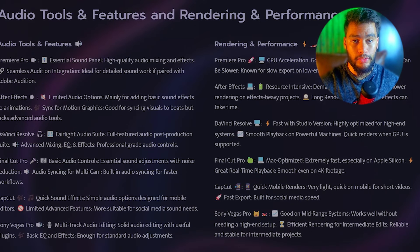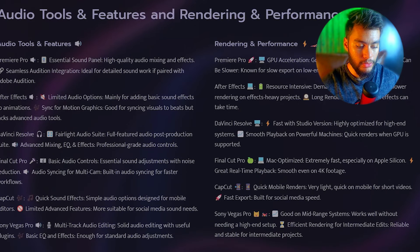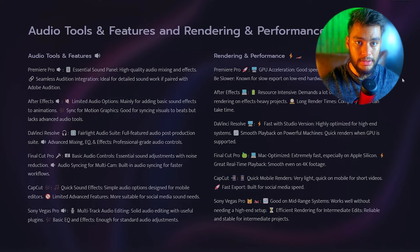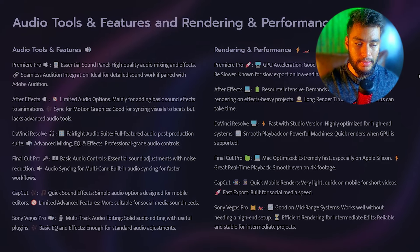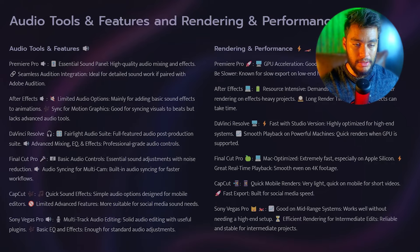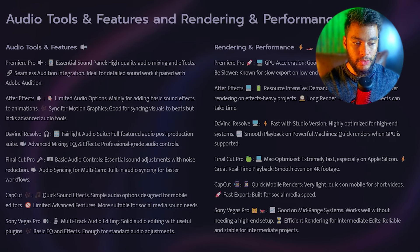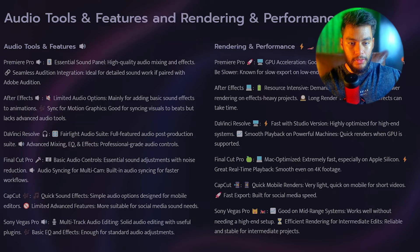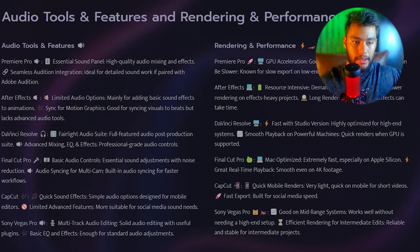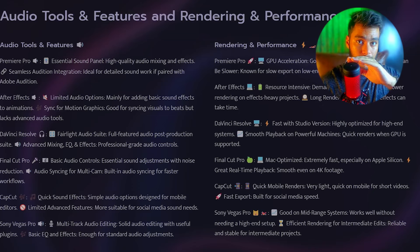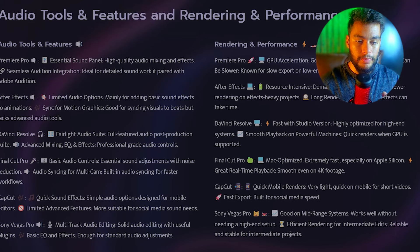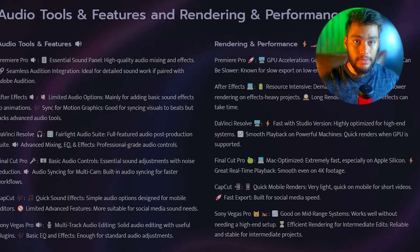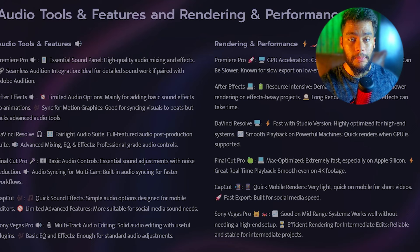Let's talk about audio tools and features. Premiere Pro is the best software if you want a lot of control over your audio, because you can also pair it with Audition, which is Adobe's software for audio only. Sony Vegas Pro — if you just want to do some basic audio editing, it will get the job done. The multi-track audio editing feature is available inside this software too. Multi-track means you'll have the speaker's audio in one track, music in the second track, sound effects in the third track, and more sound effects in further tracks — that way everything is organized.